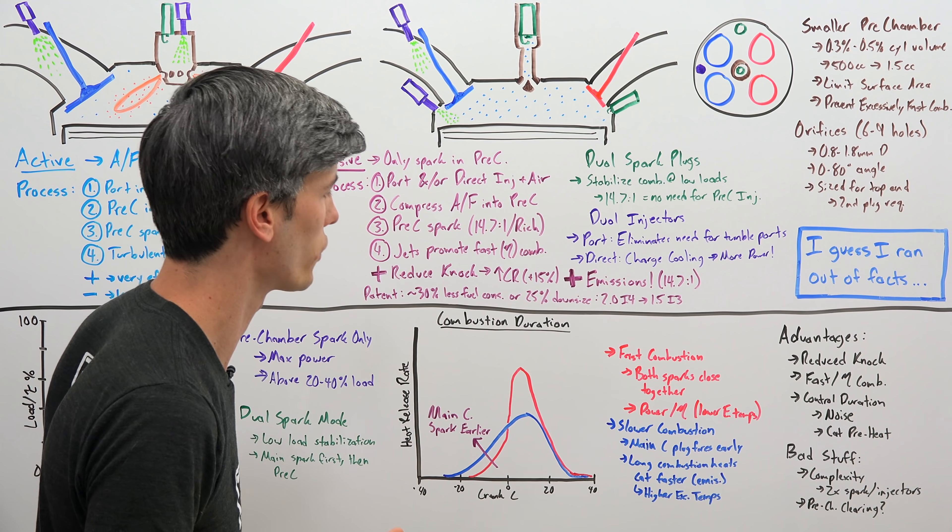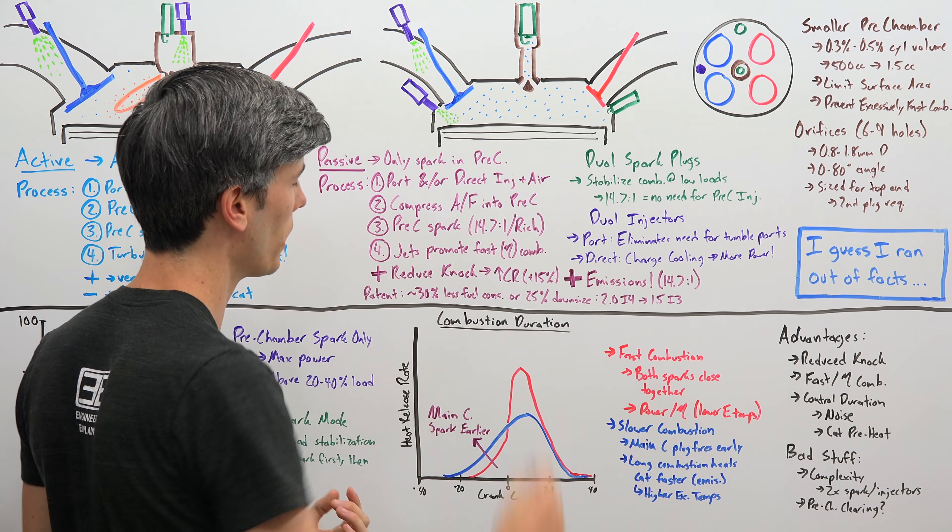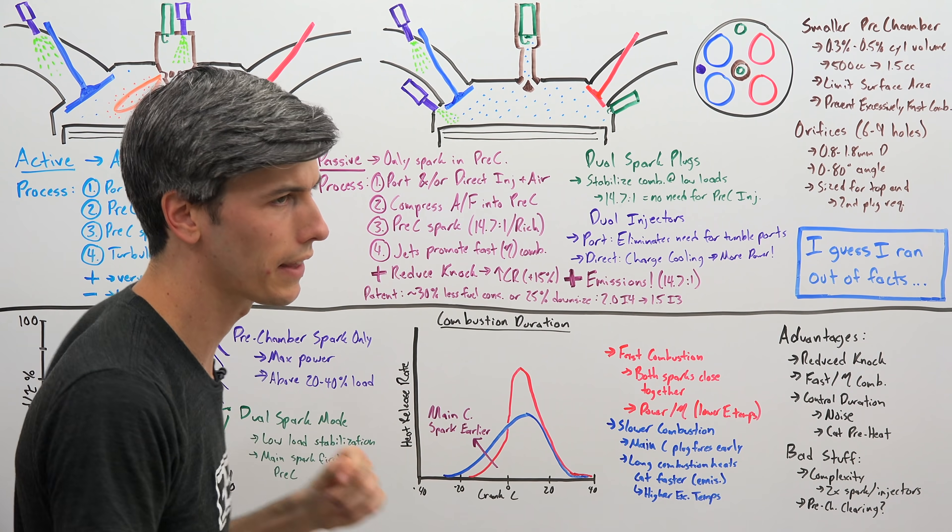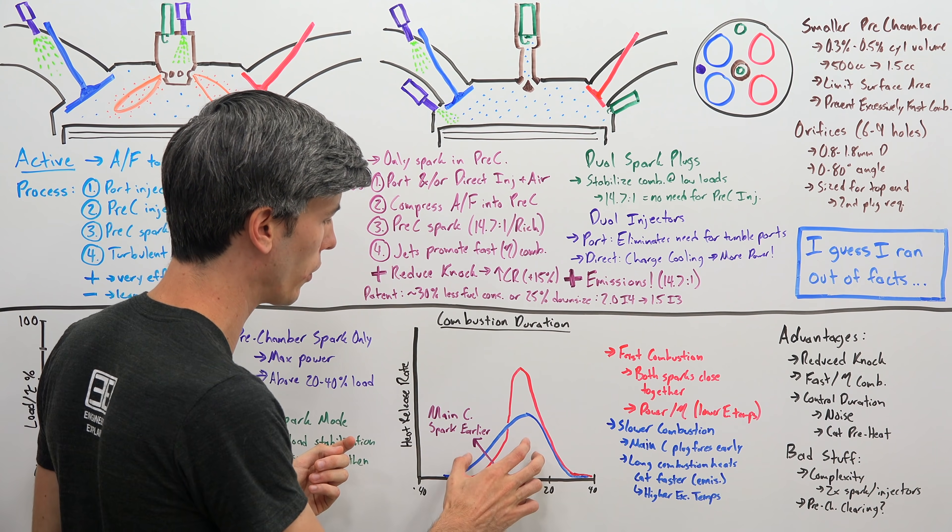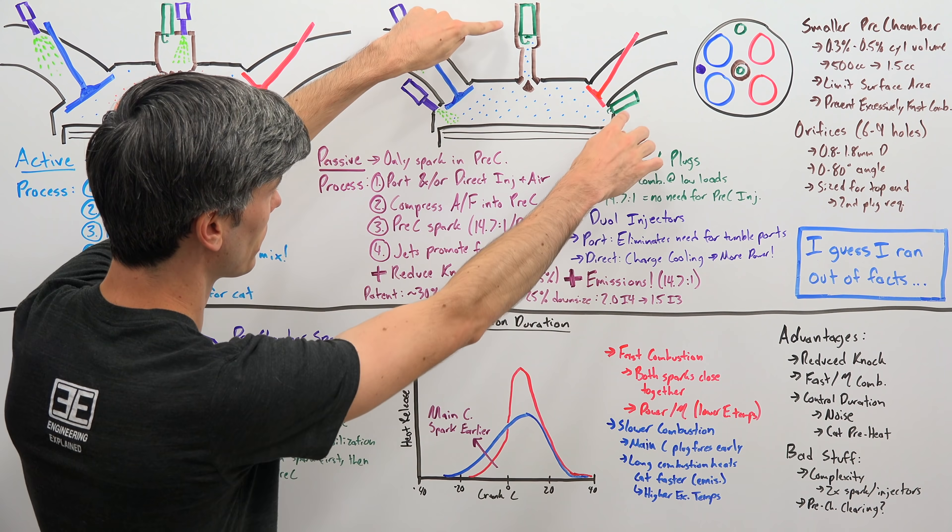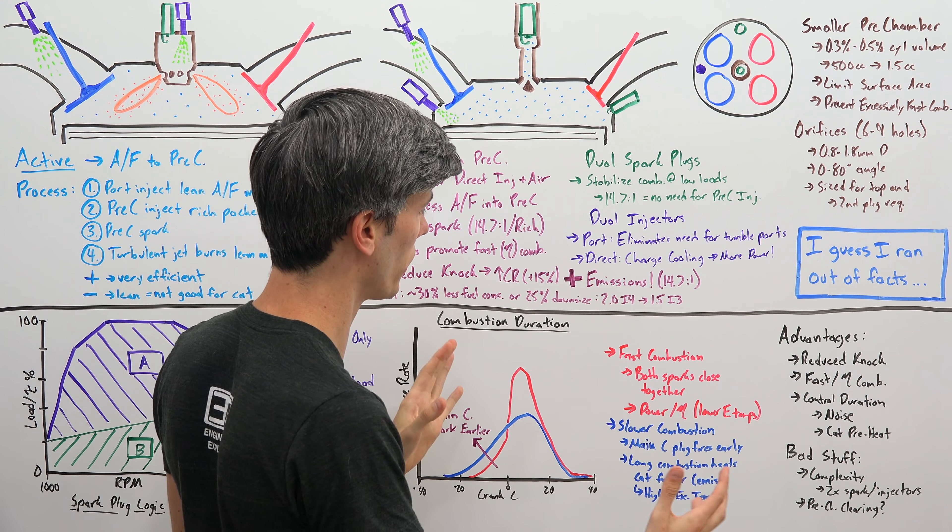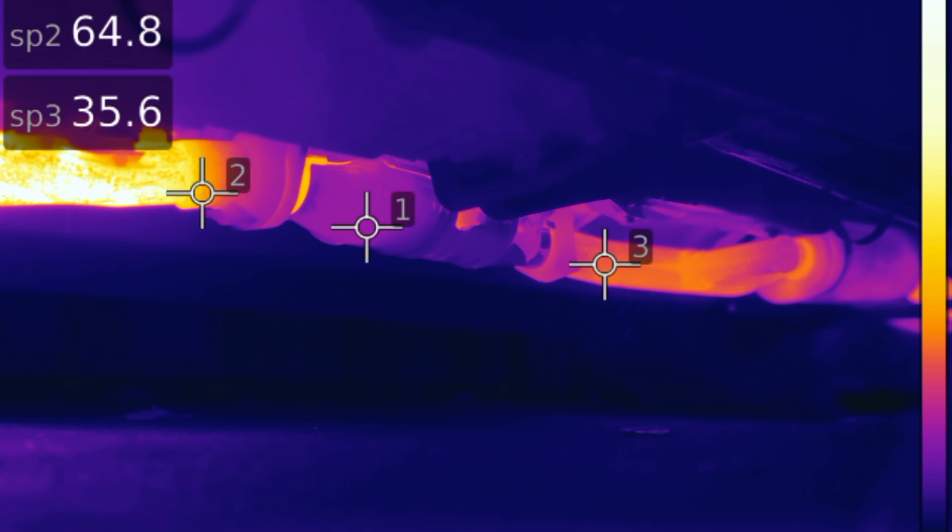So the earlier you fire the main chamber spark plug and the longer delay you then have until you fire the pre-chamber spark plug, the longer combustion is going to be. And so you're going to have a slower combustion versus if you fire them both fairly close together, you're going to have more rapid combustion occur. And so you can use this to your advantage. If you're trying to go for a bit more power, a bit more efficiency, then you of course want to speed up that combustion. But when you just start a cold engine, you want to get that catalytic converter up to temperature really quickly. And so what you do is you slow that combustion down by delaying between when you fire each of the spark plugs. And this gives you a long combustion and that gives you higher exhaust temperatures, which heats up your catalytic converter, making it effective much more quickly.